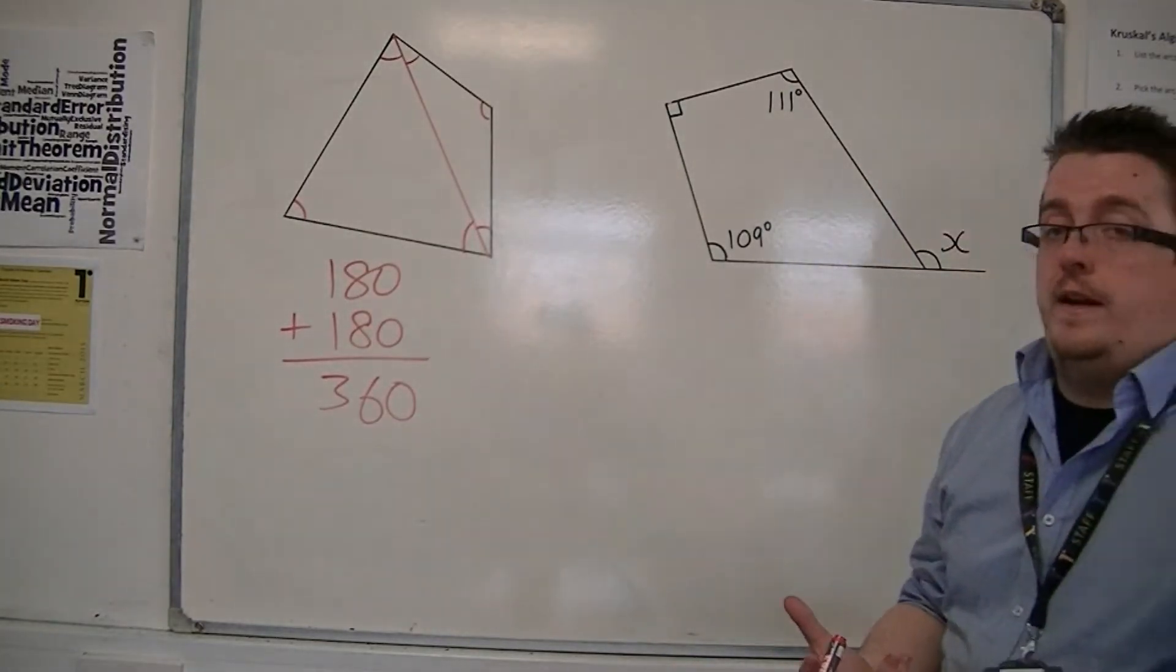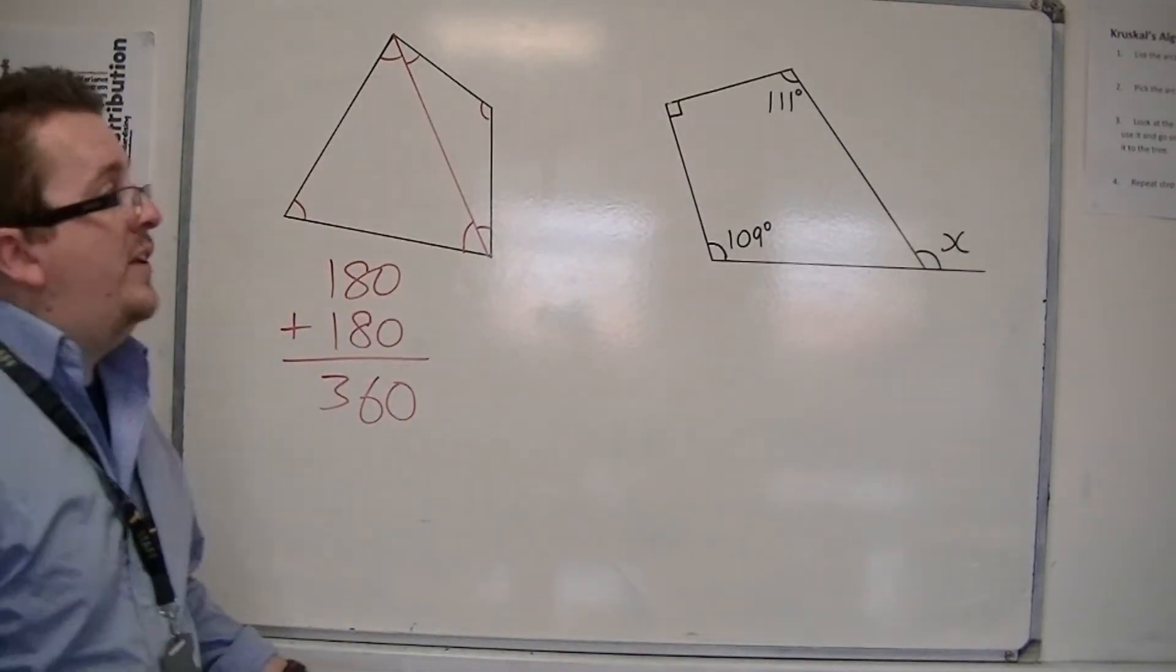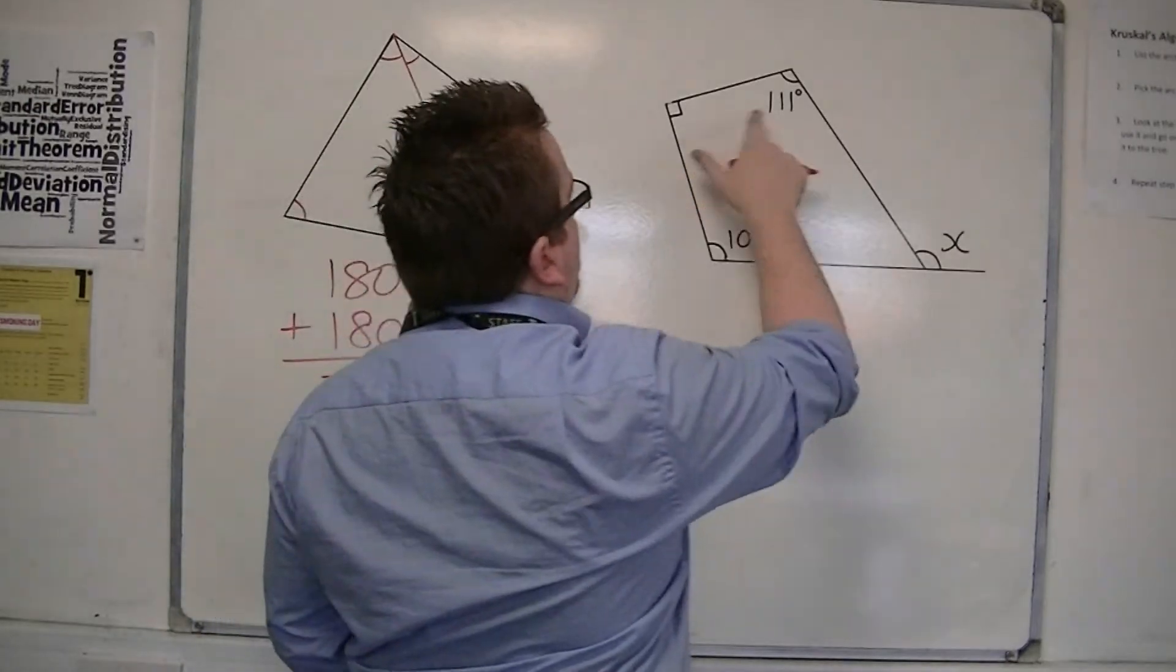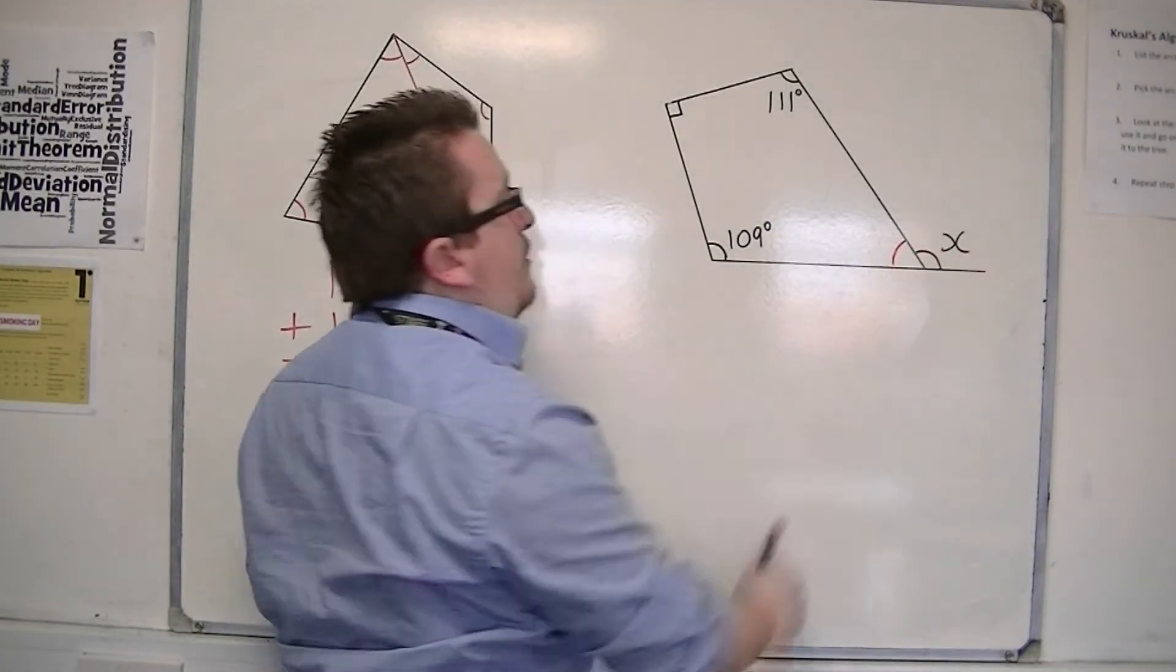So we can use that fact to solve problems like this. Here we have a missing angle x, and I have a quadrilateral here. So actually I'm missing this angle that would be very useful to find.